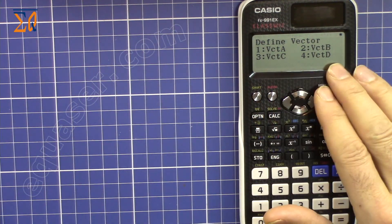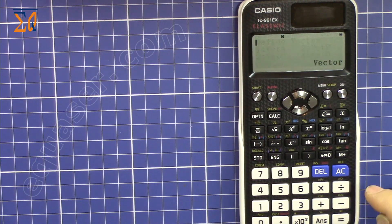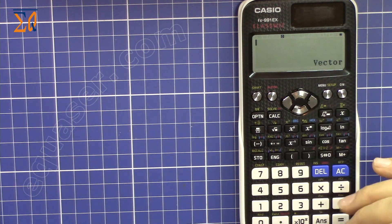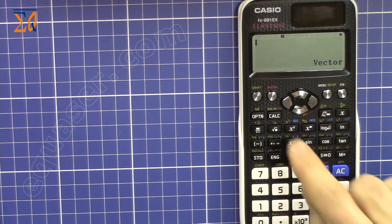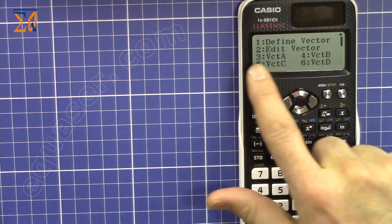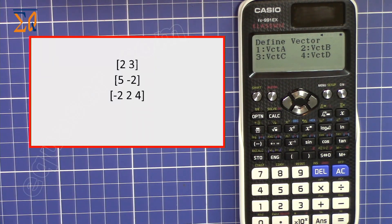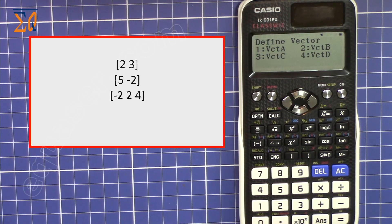In this screen we are defining four vectors: vector A, B, C, and D. Sometimes this screen disappears — I'm purposely clearing it by pressing AC (all clear) so you know how to bring it back at any time. Press Option, then 1 (Define), and this way you will bring back the menu.